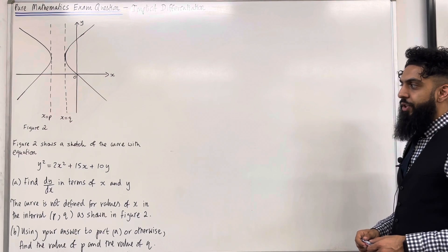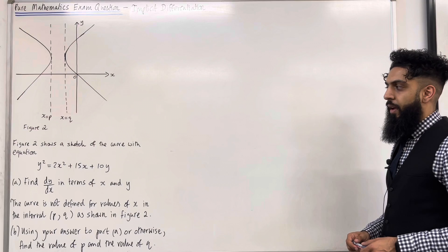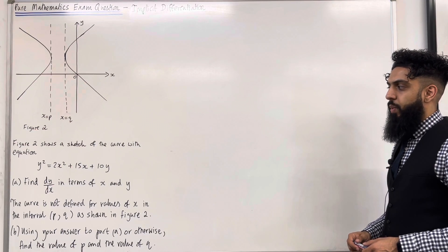Figure 2 shows a sketch of the curve with equation y squared equal 2x squared plus 15x plus 10y. Part A, find dy over dx in terms of x and y.